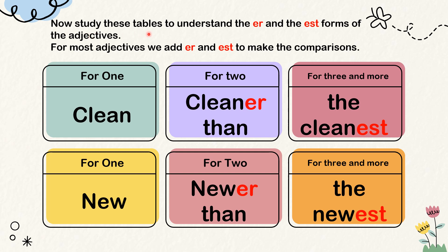Now study these tables to understand the ER and EST forms of adjectives. For most adjectives, we add ER and EST to make comparisons — for example, clean, cleaner than, the cleanest. His room is clean. His sister's room is cleaner than his. His mother's room is the cleanest.